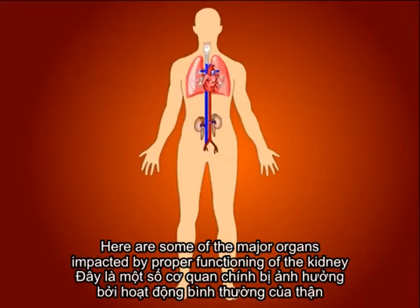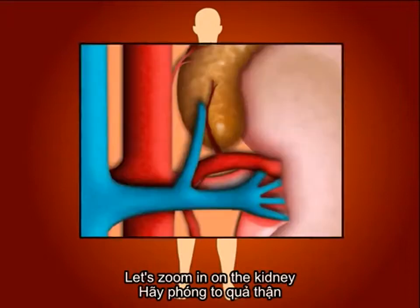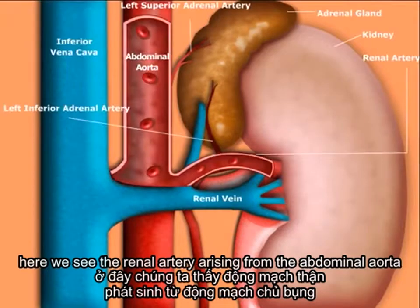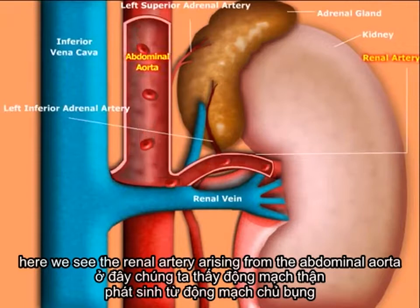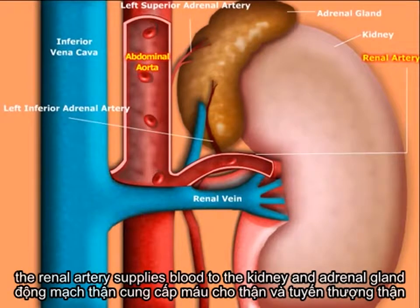Here are some of the major organs impacted by proper functioning of the kidney. Let's zoom in on the kidney. Here, we see the renal artery arising from the abdominal aorta. The renal artery supplies blood to the kidney and adrenal gland.